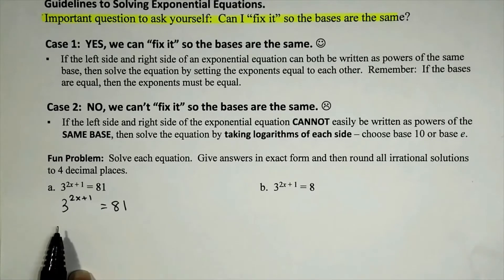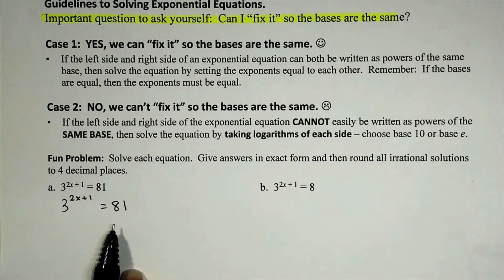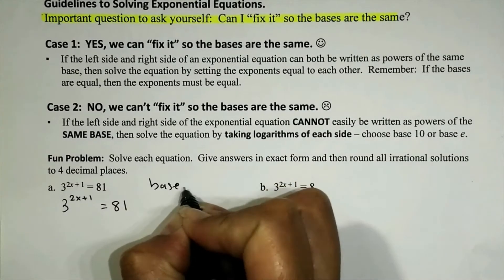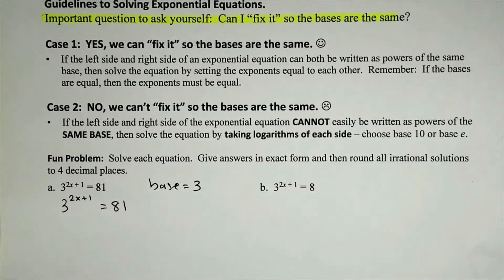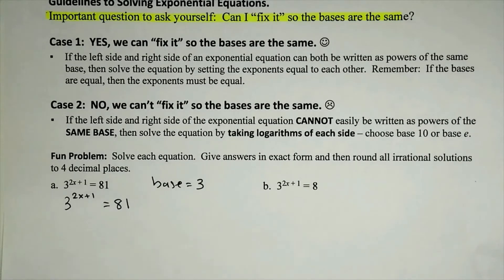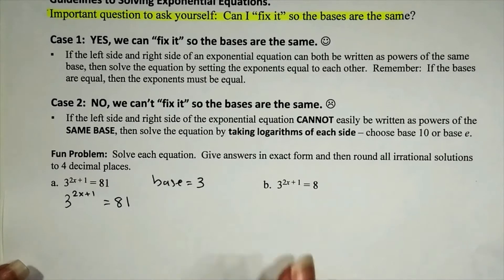The base on the left is 3, the base on the right is 81. 3 is a prime number, so I'm going to ask myself, can I easily fix it so we work in terms of base 3? And the answer should be yes, because last time I checked, 81 is a power of 3. I think it's 3 to the fourth power. So to answer that question, can we easily fix it so the bases are the same? For this problem, we can. So let's aim for base 3.